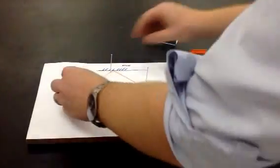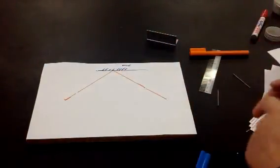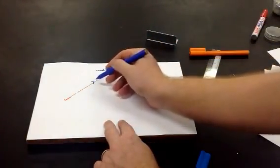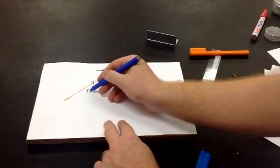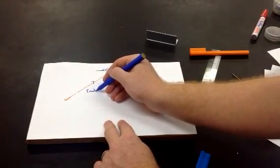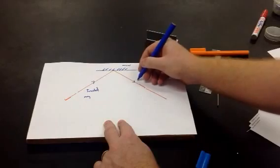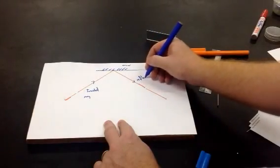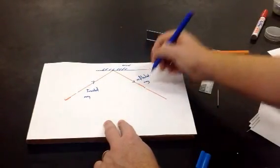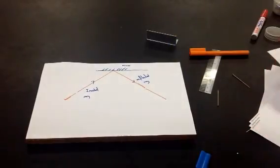The final step is to remove your pins, and now we can start labeling it. So, this line is the incident ray, this is the reflected ray, and now we need to find our normal.